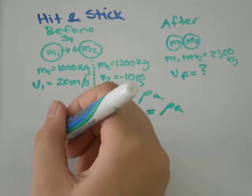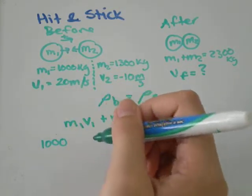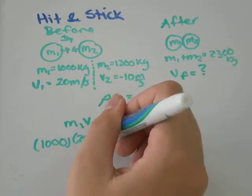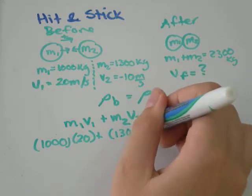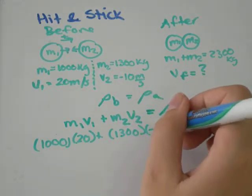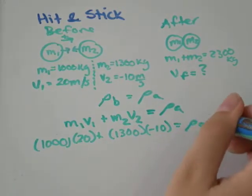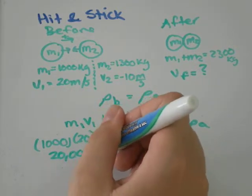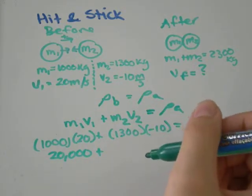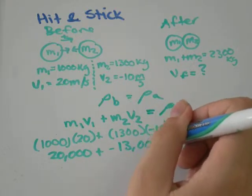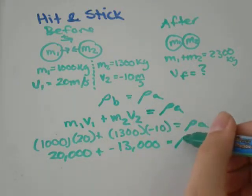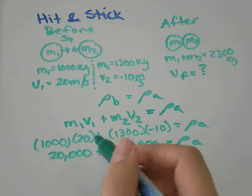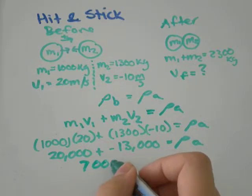So M1 was 1000, and then the velocity was 20. Plus M2 was 1300, and the velocity was negative 10. And that equals the momentum after. 1000 times 20 is going to be 20,000. Plus 1300 times negative 10 is going to be negative 13,000. That equals the momentum after.